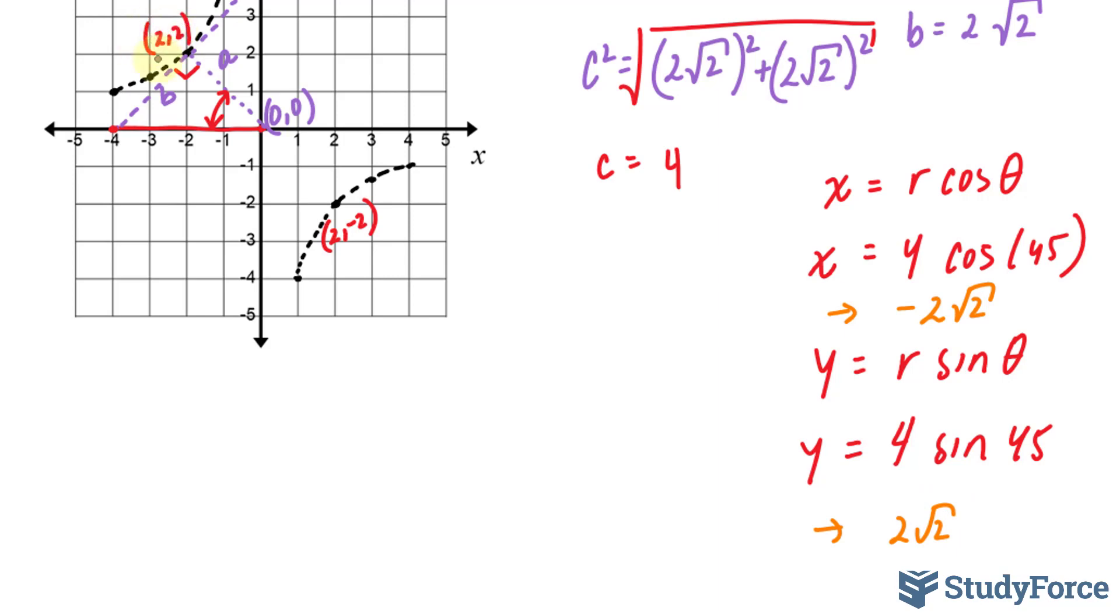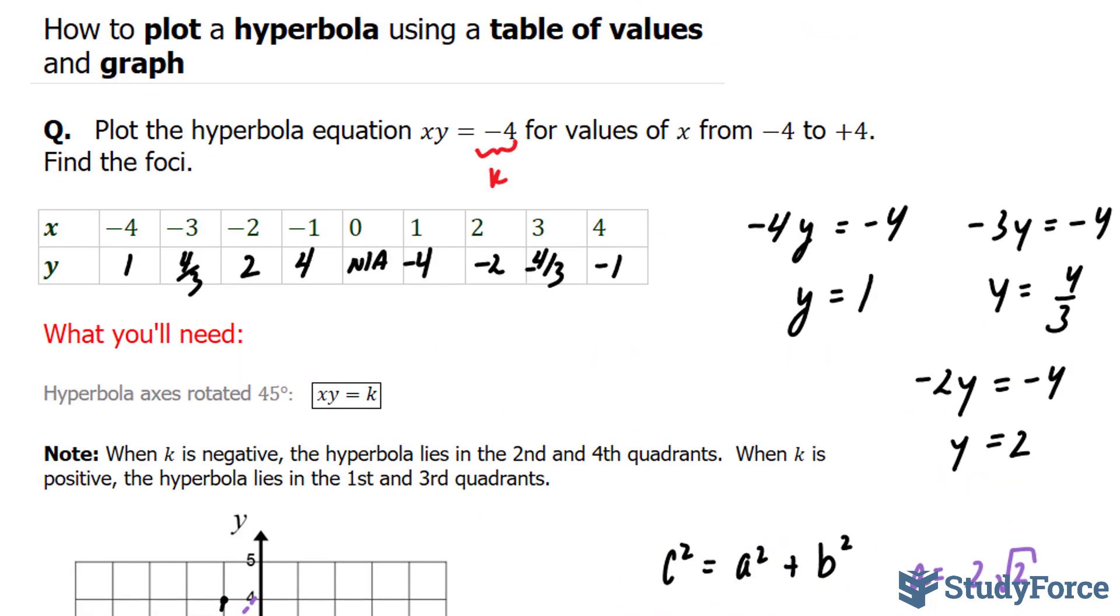So the coordinates of this focus, focus 1 we'll call it, is negative 2 square root of 2 and positive 2 square root of 2. The opposite is true for this one. Focus 2 is positive 2 square root of 2 and negative 2 times the square root of 2. So there you have it. That is how to plot a hyperbola using a table of values and graph.